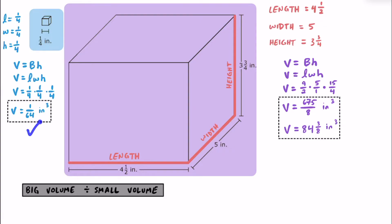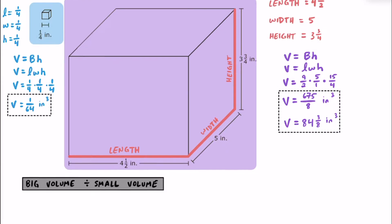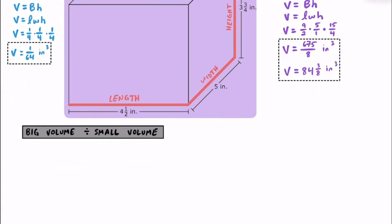So we know the amount of space that one cube takes up is one sixty-fourth of a cubic inch, and the total amount of space the right rectangular prism takes up is 675 eighths cubic inches. To figure out how many cubes fit inside, we just divide these volumes. Since we're going to be dividing fractions, let's use the improper fraction version — 675 eighths divided by one sixty-fourth — and the units will just cancel out when we divide.